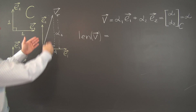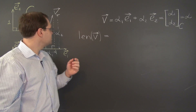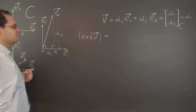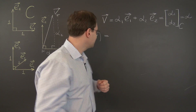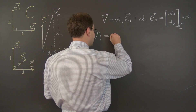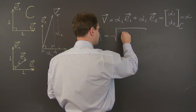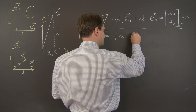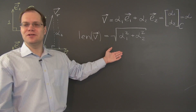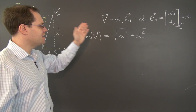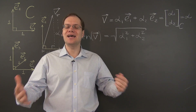Now we look at this right triangle and apply the Pythagorean theorem, which tells us that the hypotenuse has length equal to the square root of alpha_1 squared plus alpha_2 squared. And the famous formula for the length of a vector in component space with respect to a Cartesian basis has been derived.